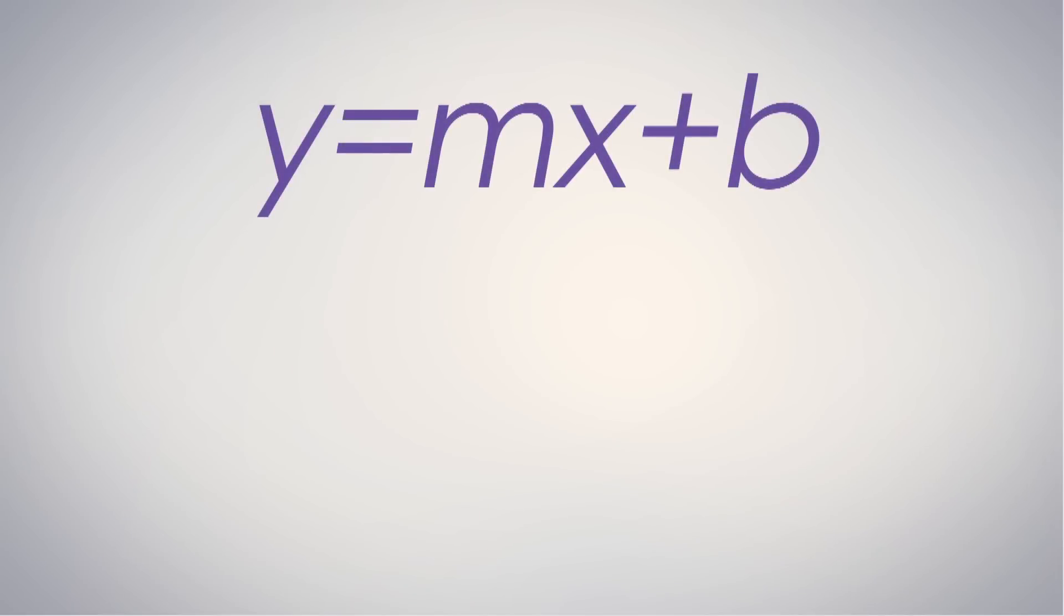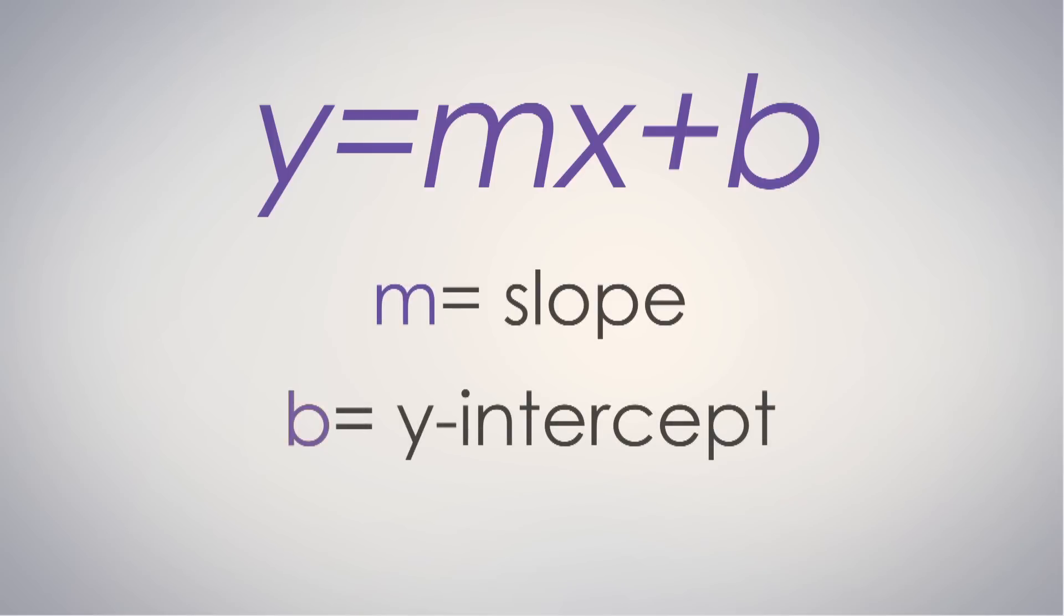First, let's recall that the slope-intercept form is y equals mx plus b, where m is the slope and b is the y-intercept. It is important to note that every linear function can be written this way. Using basic algebra, let's practice putting linear functions into the y equals mx plus b format.